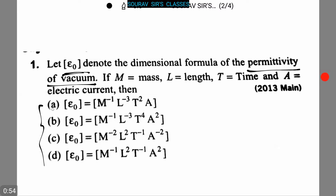The four options are: option A — E0 = M⁻¹ L⁻³ T² A; option B — E0 = M⁻¹ L⁻³ T⁴ A²; option C — E0 = M⁻² L² T⁻¹ A².